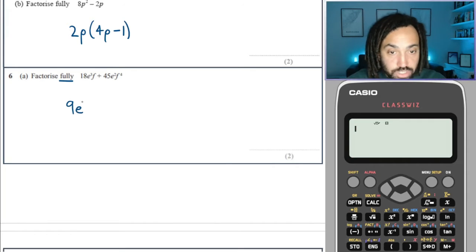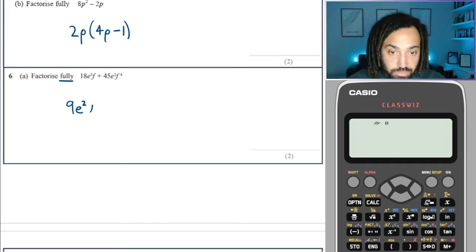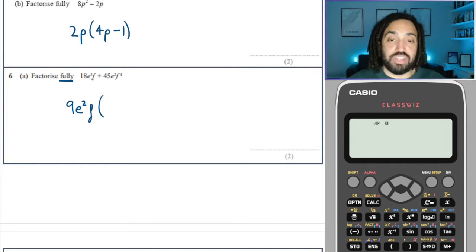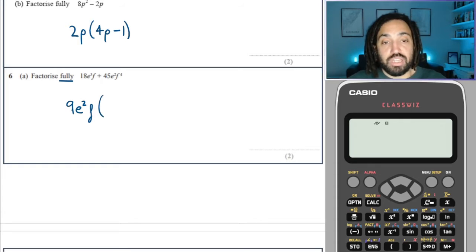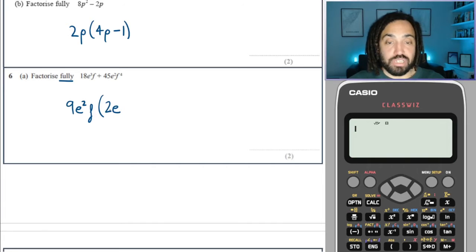We also could have an E to the three. No, only an E to the two. An F to the, just F, because there's an F to the one there, and that's the highest power that they both share.